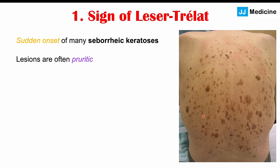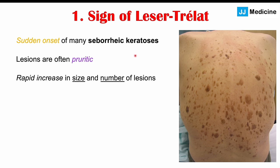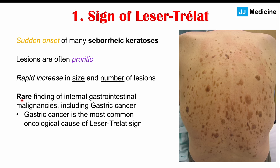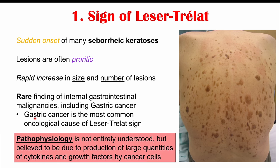In older patients with no underlying cancer, seborrheic keratoses are not going to be itchy, unless clothing is rubbing against a lesion. But with Leser-Trélat sign, the lesions are often going to be itchy, and there's a rapid increase in size and number of lesions. Leser-Trélat sign is actually a rare finding of internal gastrointestinal malignancies including gastric cancer, and we can see it with colon cancer as well. Gastric cancer is the most common oncological cause of Leser-Trélat sign. The pathophysiology is not entirely understood, but it's believed to be due to production of large quantities of cytokines and growth factors by the cancer cells.